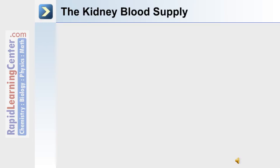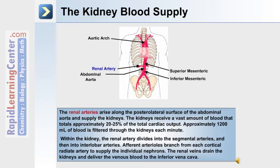In order to perform their function, the kidneys need a steady blood supply. The renal arteries deliver blood to the kidneys, and these arteries rise along the posterior lateral surface of the abdominal aorta. The kidneys receive approximately 20 to 25% of the total cardiac output, with approximately 1200 mLs of blood filtered through the kidneys each minute. Within the kidney, the renal artery divides into the segmental arteries and then into the interlobar arteries. Afferent arterioles branch from each cortical radiate artery to supply the individual nephrons. The renal veins drain the kidneys and deliver venous blood to the inferior vena cava.